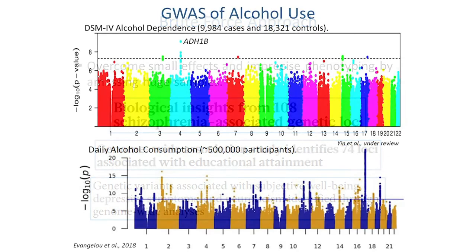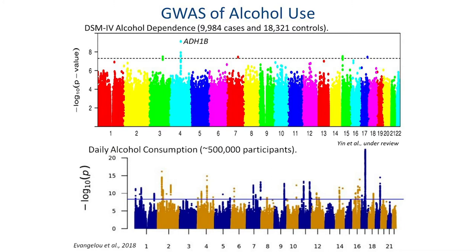Where are we with addiction? For alcohol use disorders, this is a Manhattan plot — on the x-axis you have the chromosome and on the y-axis the negative log10 of the p-values, where higher values are more significant. In this paper I was involved in, we had one significant hit: ADH1b, which Dr. Messing also discussed in terms of alcohol metabolism. It's not exciting because it was first reported 25 years ago in the candidate gene literature.